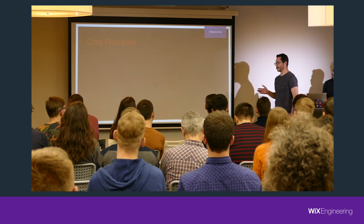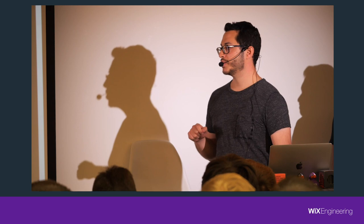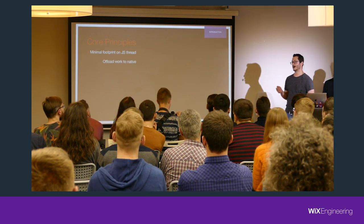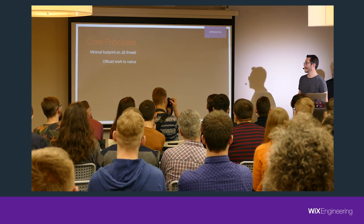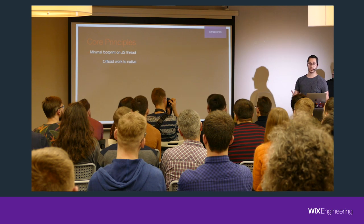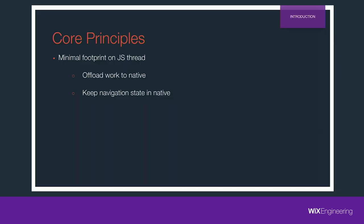Let's talk about the core principles that guided us when we rewrote the library. The first is a minimal footprint on the JavaScript thread. React Native has a few bottlenecks that really hurt performance — JavaScript is a single-threaded environment, so we realized we had to offload almost everything we can to native. Every work relating to navigation state has to be done in native, so we can keep the JavaScript thread free for our users.